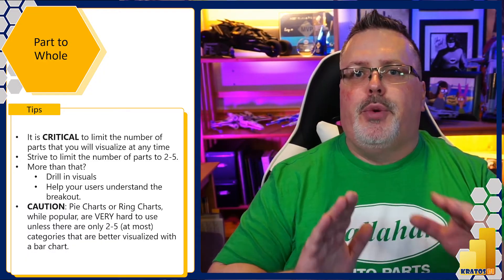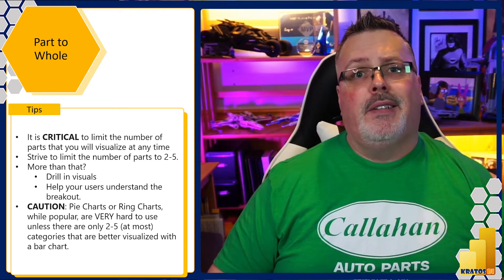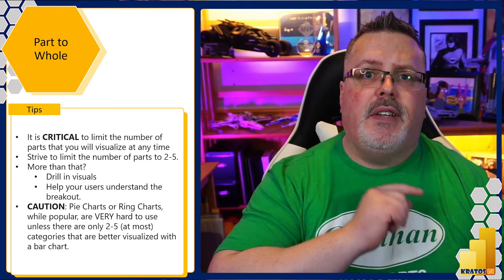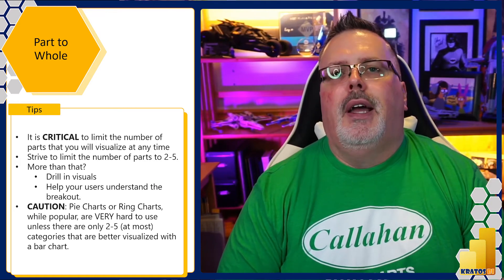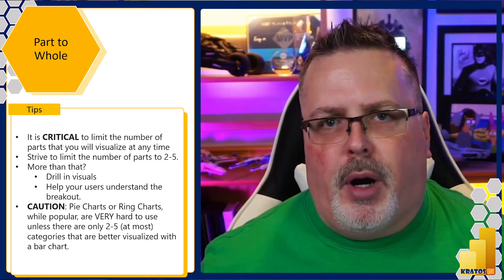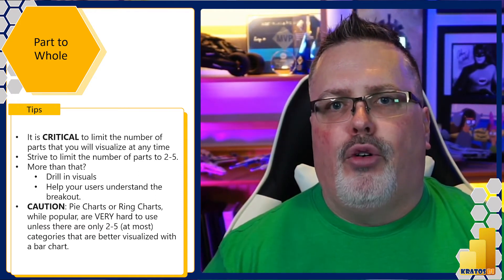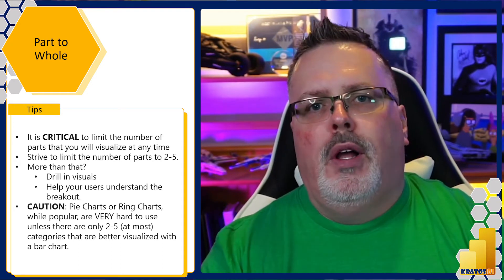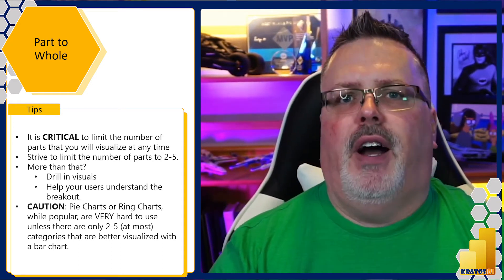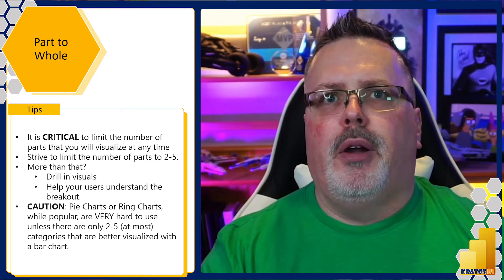Before we get into this, I want to make sure we call out some very important things. We want to make sure that we're keeping these things as simple as we possibly can. This is exorbitantly important when it comes to parts of a whole. You're trying to visualize all the parts of your business inside of one visual. Your goal is to strive to have maybe two to five items when we're talking about comparing parts of a whole.